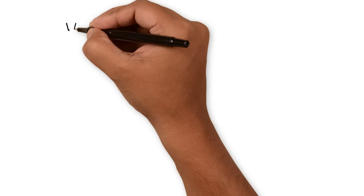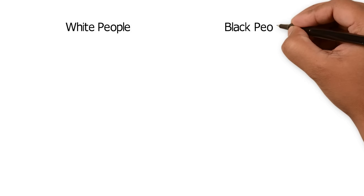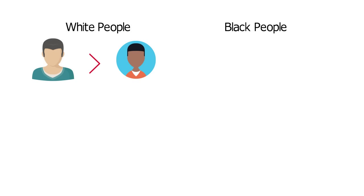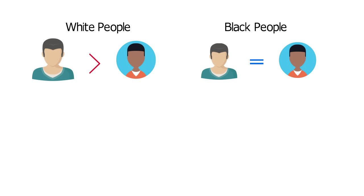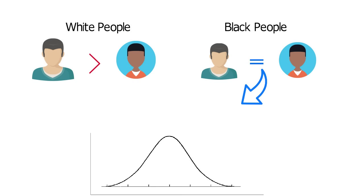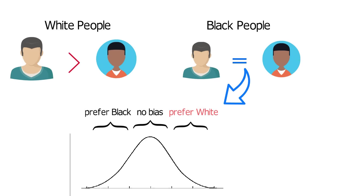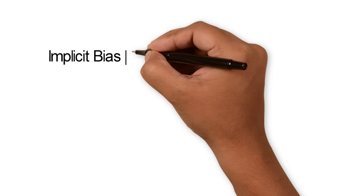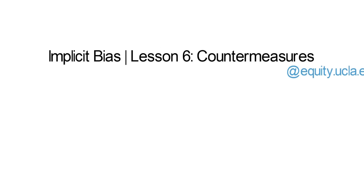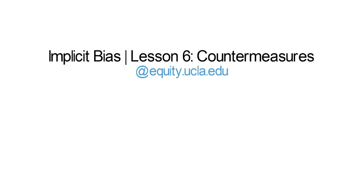Pervasiveness does not mean that every single person has the exact same amount of bias — there is wide variability across individuals and groups. For instance, most whites have an implicit preference for whites over blacks, but African Americans show no preference on average. But there's a natural bell curve around that zero average, with about a third of African Americans also showing an implicit attitude in favor of whites over blacks. Unfortunately, no one is immune, but this doesn't mean that we're powerless. To learn more, watch my final video in this series, Lesson 6: Countermeasures.